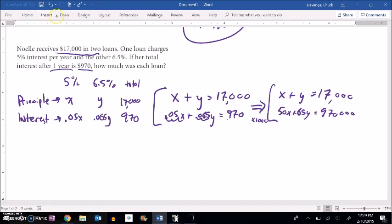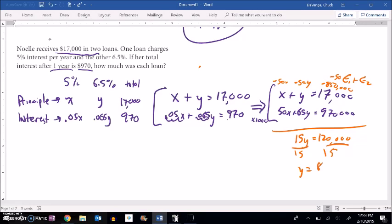So now I'm going to solve this system. I'm going to multiply this equation 1 by negative 50 and add it to equation 2. So if I multiply this by negative 50, I get negative 50X, negative 50Y, and then 17,000 times negative 50, negative 850,000. So that means now I can do some subtraction. Negative 50 plus 50 is zero. Negative 50Y plus 65Y is 15Y. And then negative 850,000 plus 970,000 is 120,000. And now I can divide by 15. It looks like Y is 8,000.